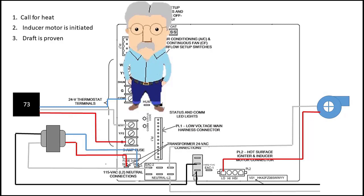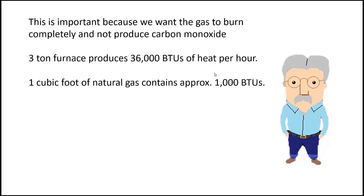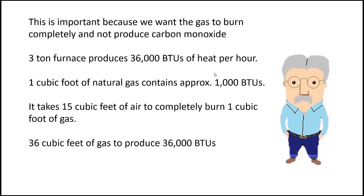The next step in the sequence is draft must be proven. Now this is very important because we don't want to produce carbon monoxide. And in order to do that, we need to provide enough air. A three ton furnace produces 36,000 BTUs of heat per hour. One cubic foot of natural gas contains approximately 1,000 BTUs. It takes 15 cubic feet of air to completely burn that one cubic foot of gas.